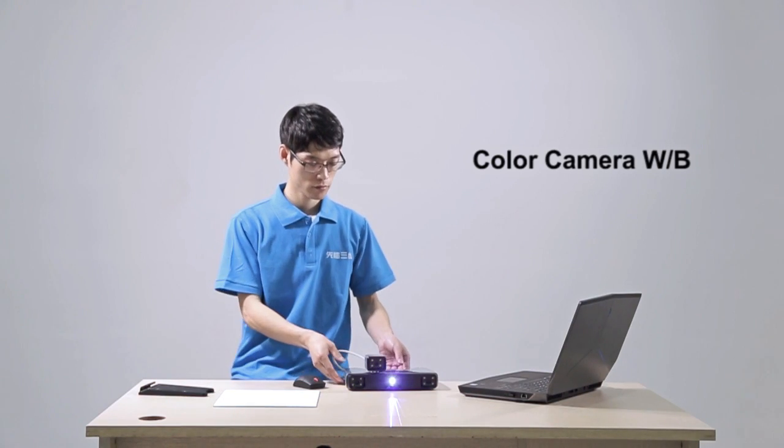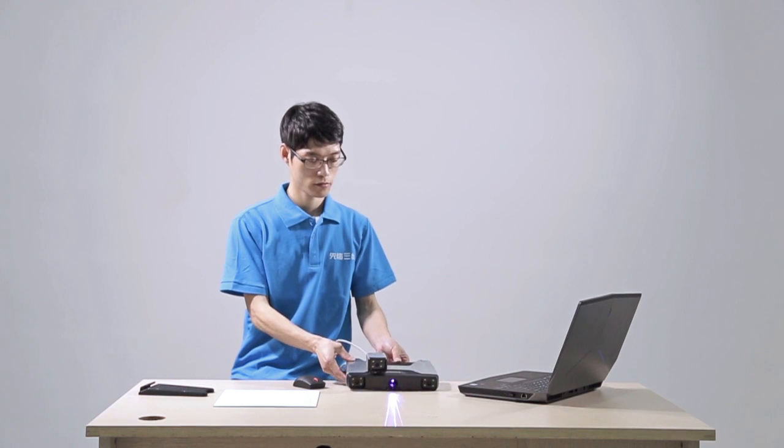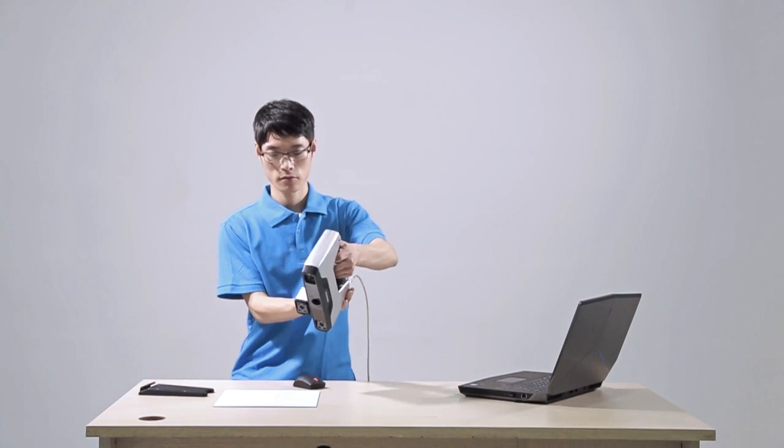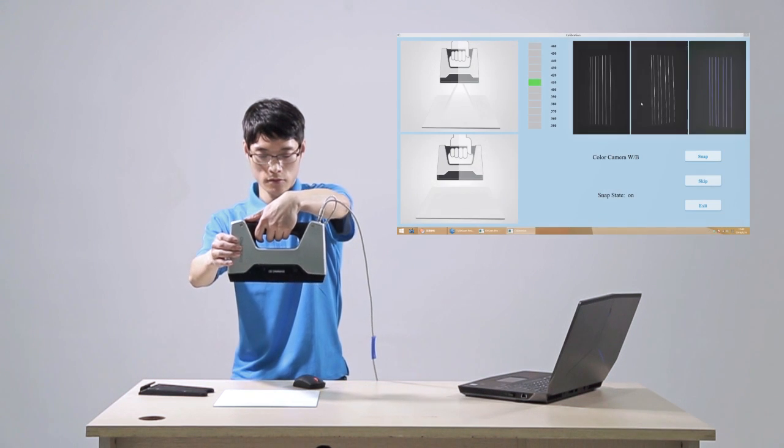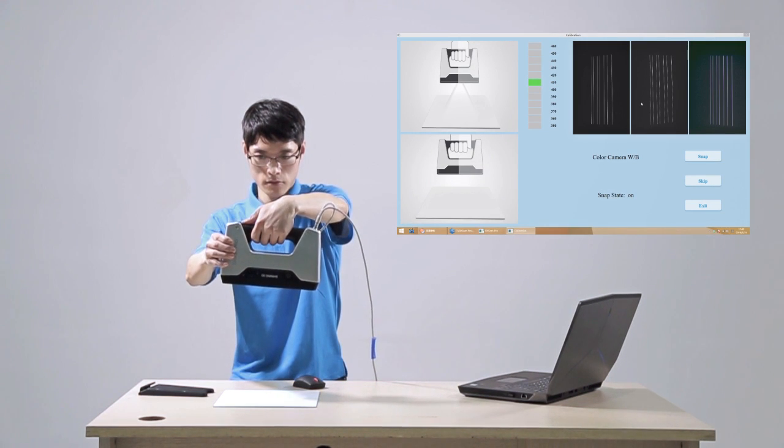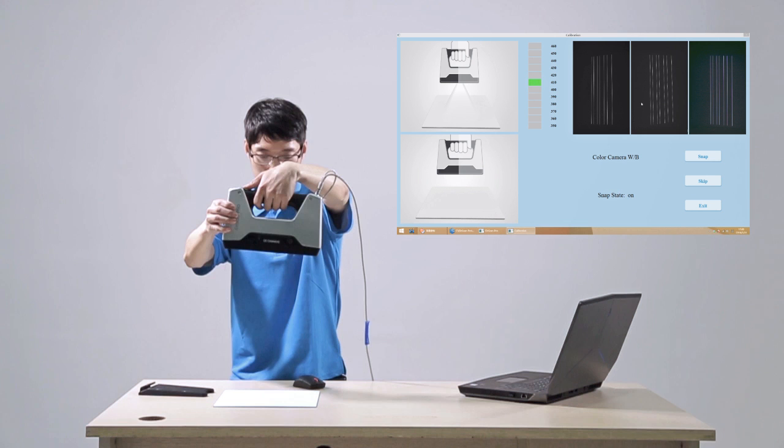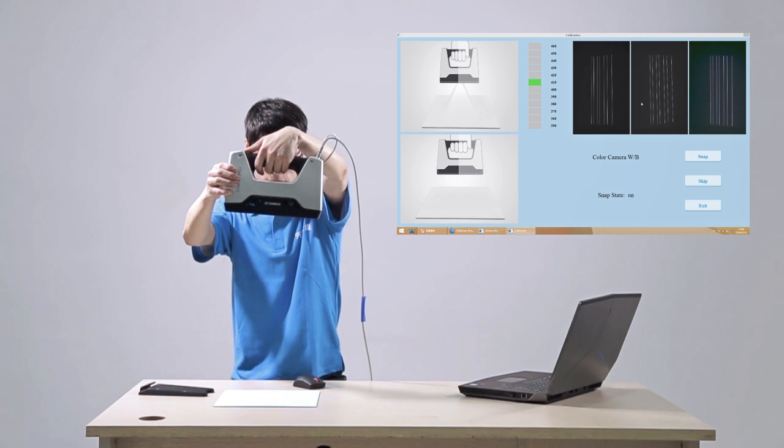Keep the white side of the board on the table. Press the start button. Hold the scanner moving up and down to the distance just overlapping the blue box on the software. The white balance is done.